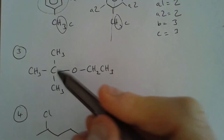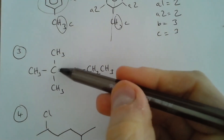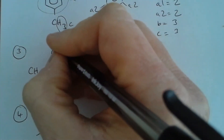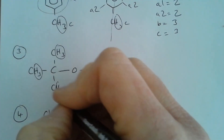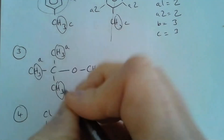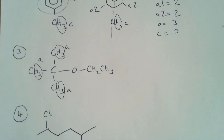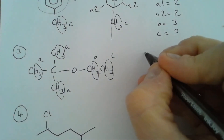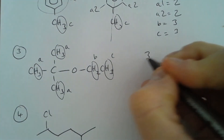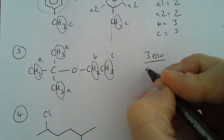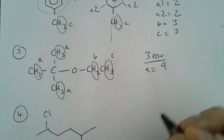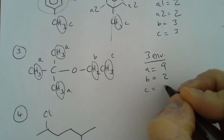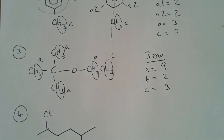Question three: there is a rotational axis of symmetry around the central carbon atom, meaning all the hydrogens in environment A are equivalent. The molecule has three environments total — A with an integral of nine, B with an integral of two, and C with an integral of three.